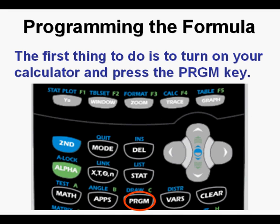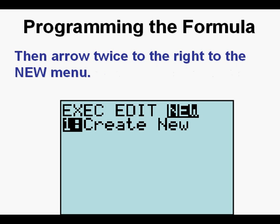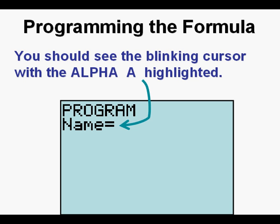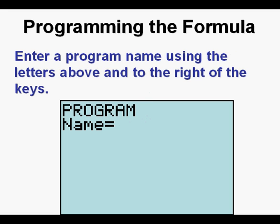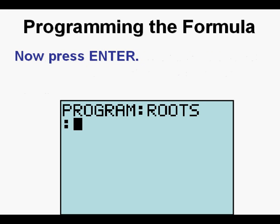Start by pressing the Program key PRGM. You may have a list of programs here already or have no programs installed yet. Arrow twice to the right to get to the New menu, then press Enter. You should see the blinking cursor with Alpha A highlighted. Enter a program name using the letters above and to the right of the keys — it has to be 8 characters or less. 'Roots' might be a good name. Press Enter. The blinking cursor after the colon is inviting you to start inputting the program code.